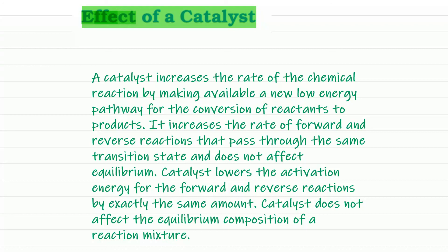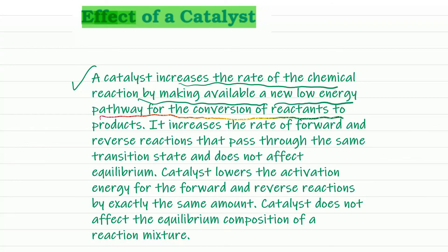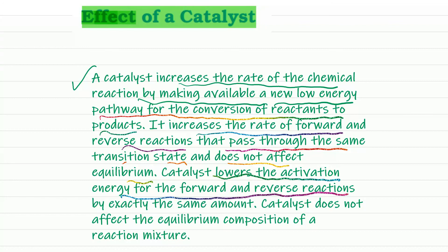Now the effect of catalyst, which we have discussed earlier. A catalyst does not create any disturbance on the equilibrium. What it does is bring the equilibrium faster. Catalyst increases the rate of chemical reaction by making available a new energy pathway for the conversion of reactants to products. It increases the rate of both forward and reverse reactions that pass through the same transition state. The catalyst lowers the activation energy for both forward and backward reactions by exactly the same amount.